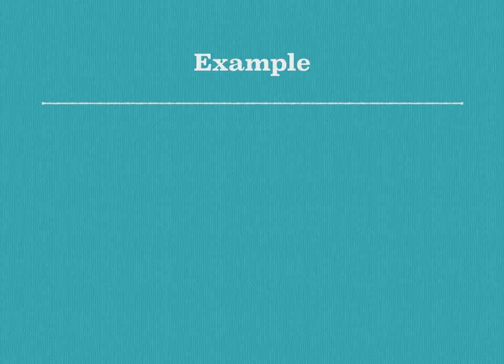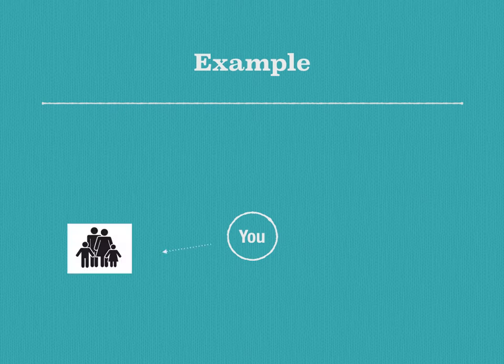Now, an example. You exist because of the multiple groups you are a part of and associate yourself with. One of the first groups you exist within is your family. Whether it's by blood or by relation, your family helps construct who you are. Another group you may belong to that constructs your identity is your sexual orientation. This could be a clear marker of where you stand within society based on the person you love.